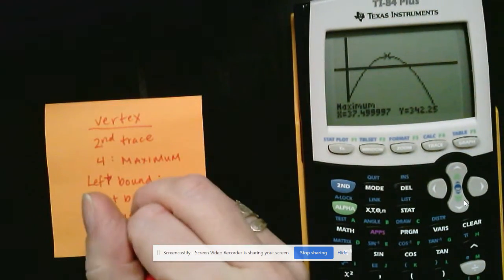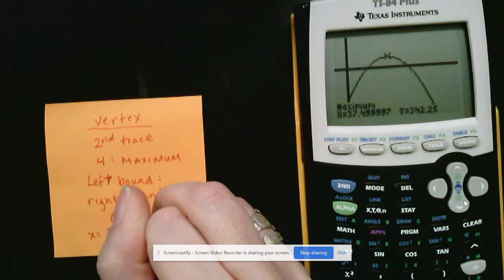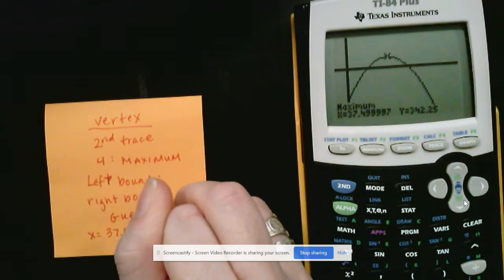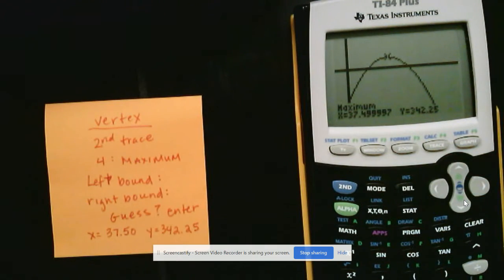And then my Y value is already at the hundredths. So 342 and 25 cents because that represents money. So this is the number of items that would need to be sold. And this is the maximum profit that I would receive if I sold that many items.